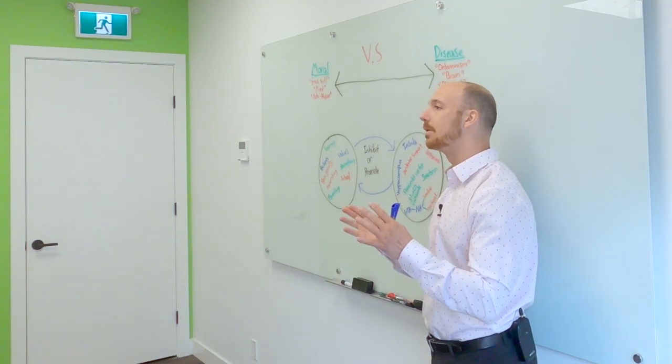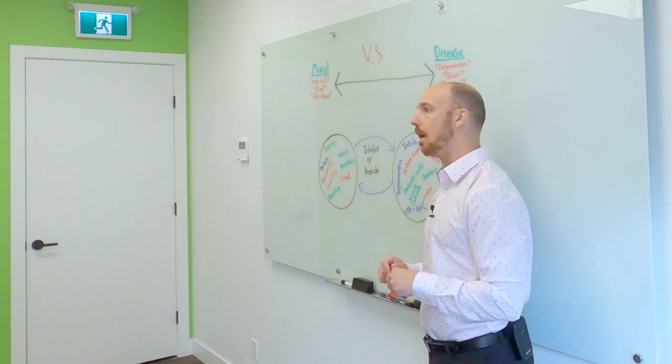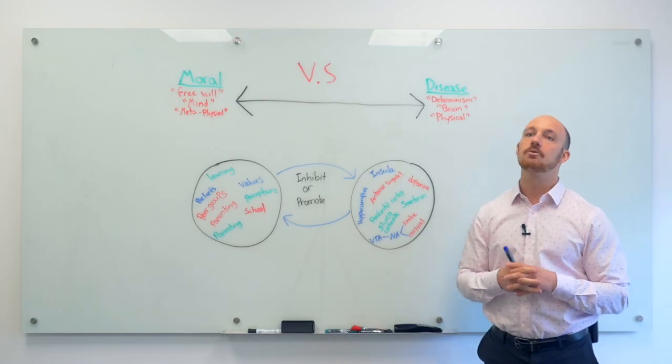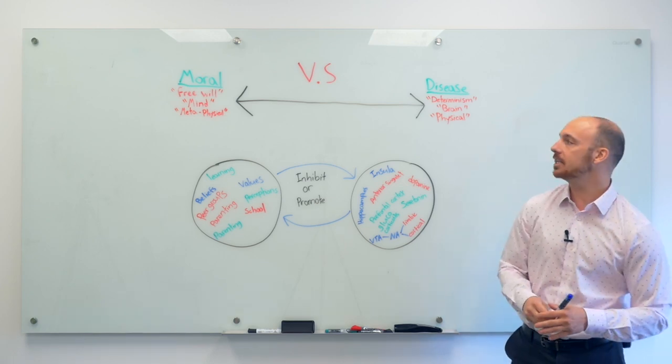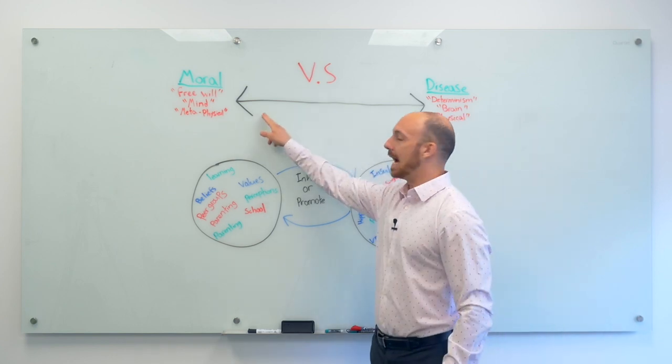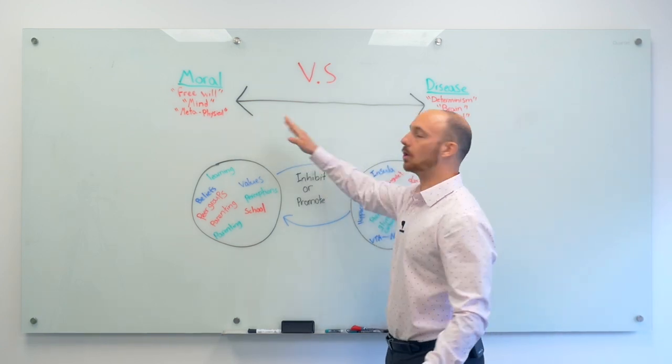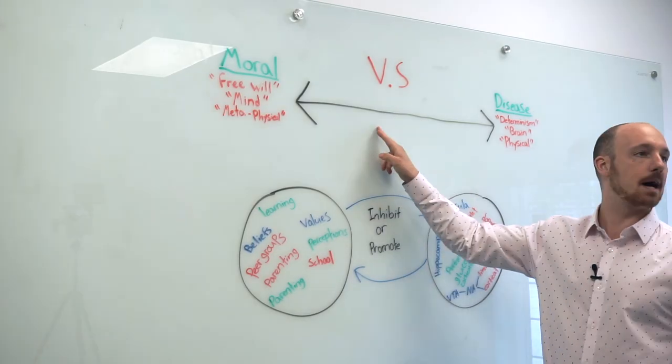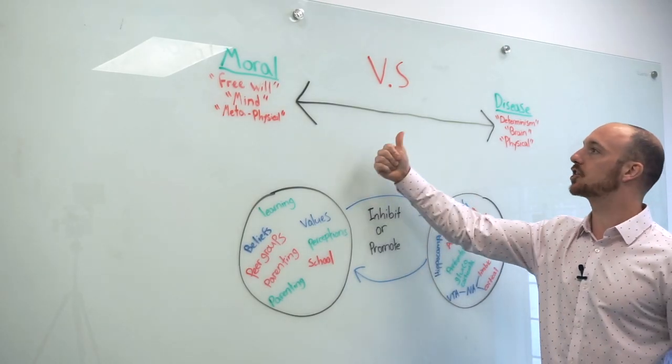Now the mental health field really likes continuums, and their continuums look something like this: good, bad. Good or bad. The two questions that they like to ask you is where are you on the good-bad continuum and in what direction are you headed in?